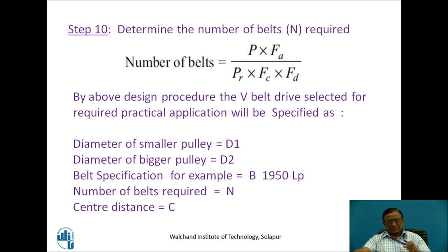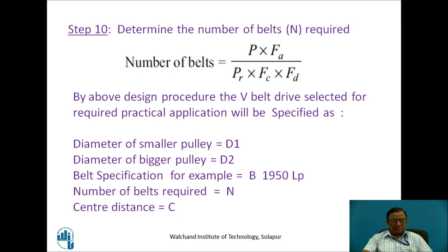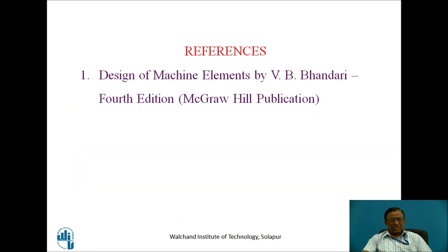This completes the total design procedure to select the V-belt drive from manufacturer's data. To conclude, the outputs are: diameter of smaller pulley D1 as a standard value, diameter of bigger pulley D2 as a standard value, belt specification (for example, B1950LP denoting B cross-section with 1950 pitch length), number of belts N, and corrected centre distance C. My reference is Design of Machine Elements by V.B. Bhandari, fourth edition. Thank you.